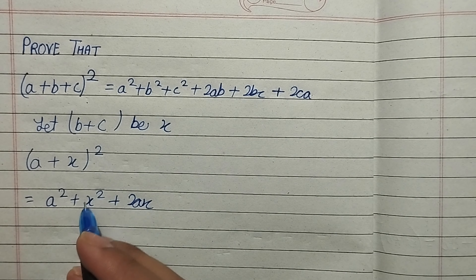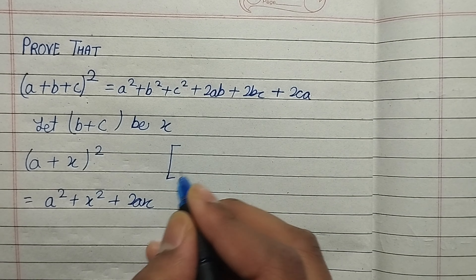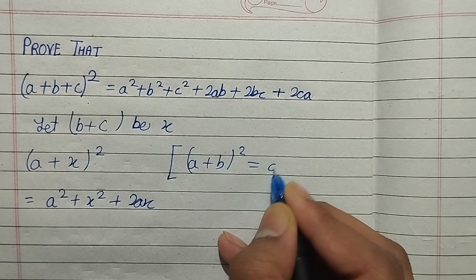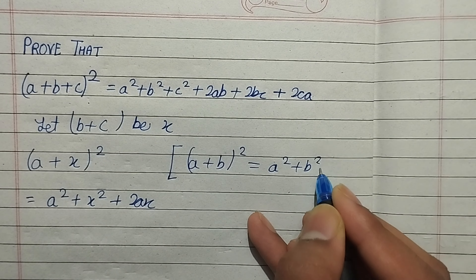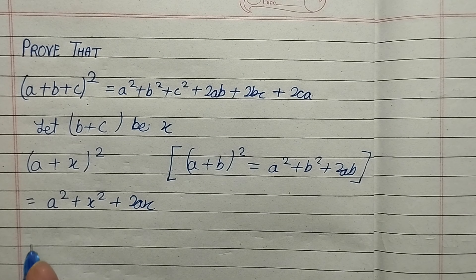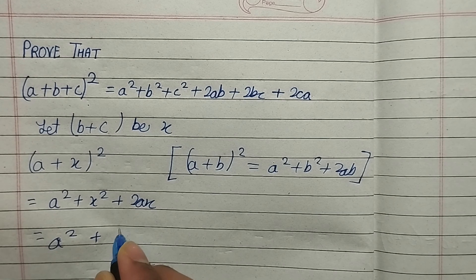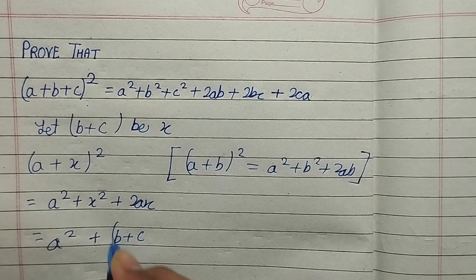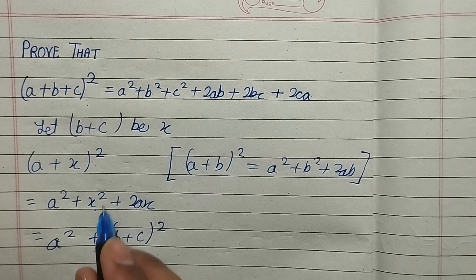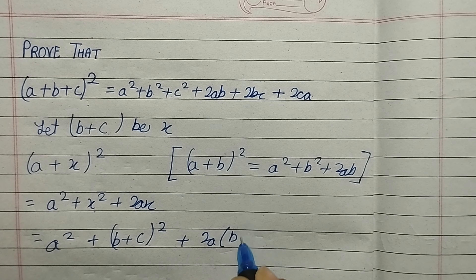So it will be a² + x² + 2ax. After that, we will put the value of x back in. Since x = b + c, x² becomes (b + c)², and 2ax becomes 2a(b + c).